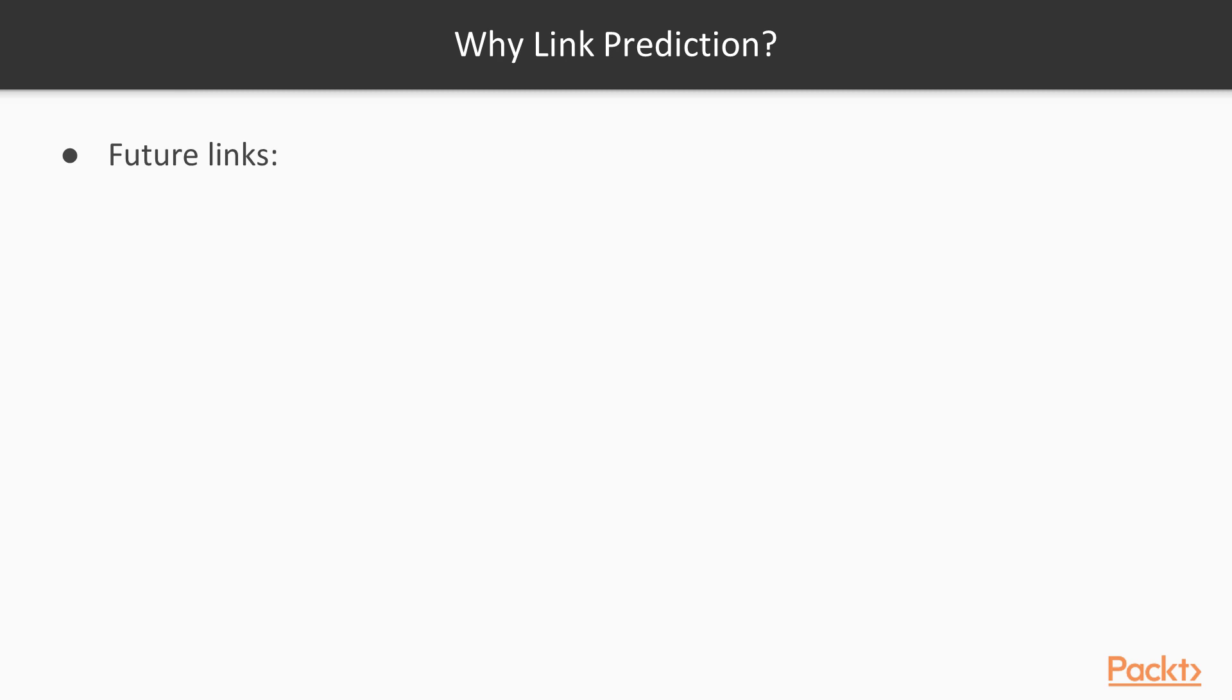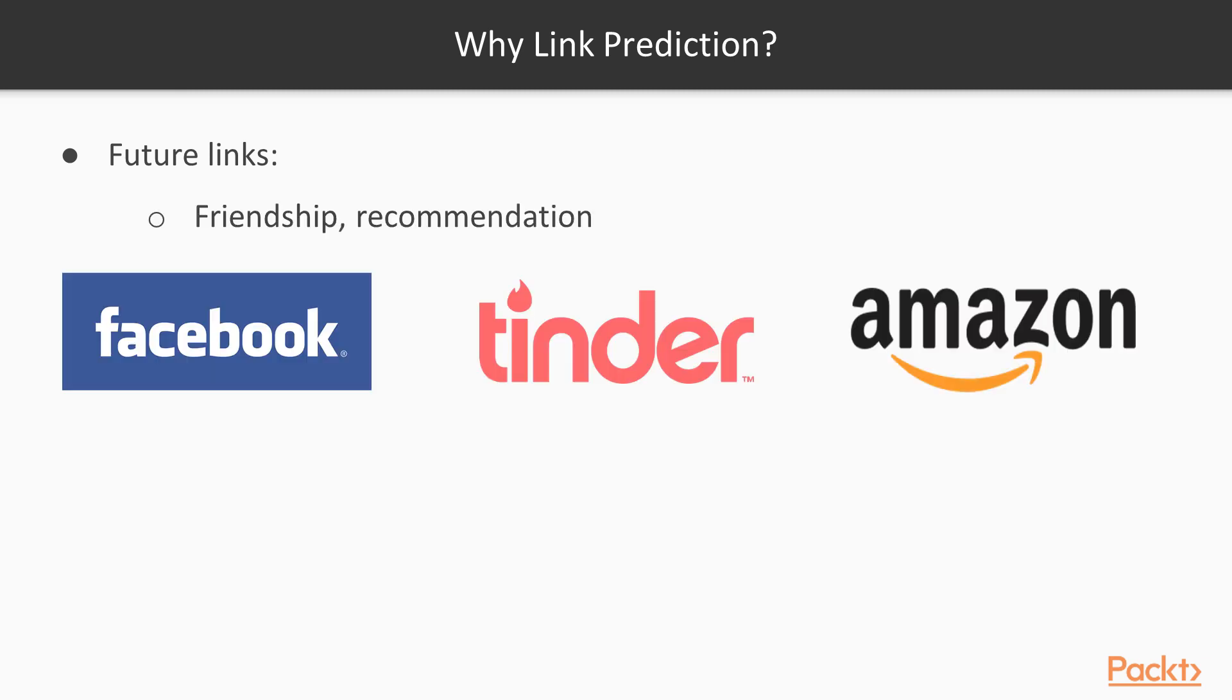For future link prediction, for instance, if you know person A and person A knows person B, it's likely you will be introduced to person B in the future. This kind of technique can be used for friendship recommendation by Facebook or by Tinder for match recommendation.